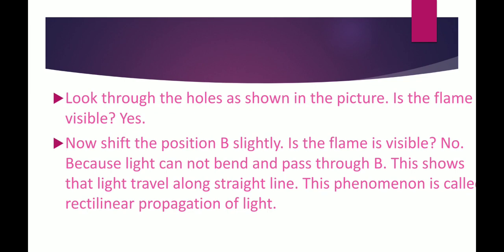Look through the holes as shown in the picture. The picture will be shown in the next slide and you will understand this activity easily. Is the flame visible? Yes. Now, shift the position B slightly. Is the flame visible now? No. Because light cannot bend and passes through B. This shows that light travels along straight line.